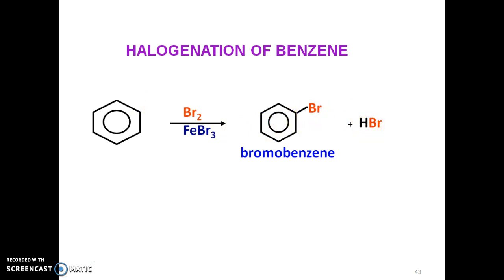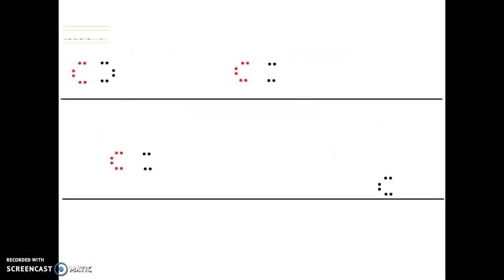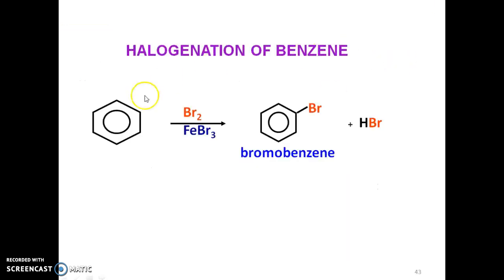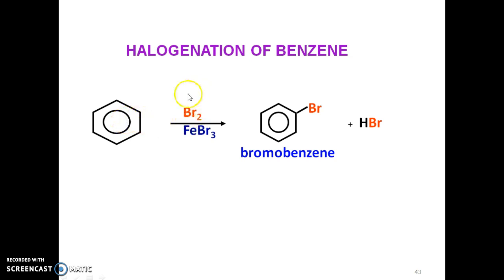Now we will go through the mechanism, which involves three steps. Step number one is formation of the electrophile. The electrophile forms as a complex. In step number one, the electrophile is Br+. Step number one does not involve benzene yet — we only use the halogen and Lewis acid to produce the electrophile Br+.